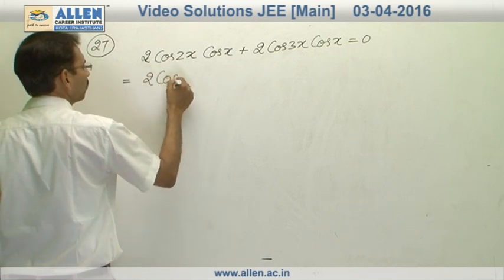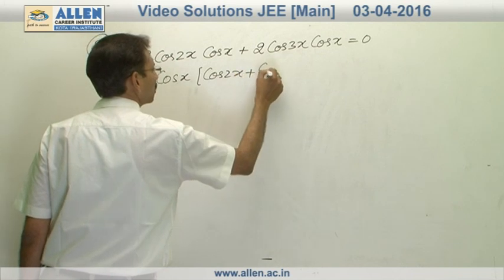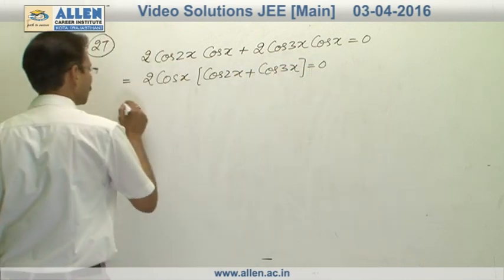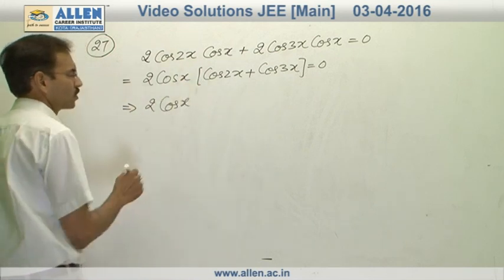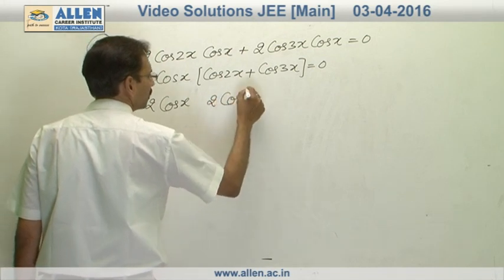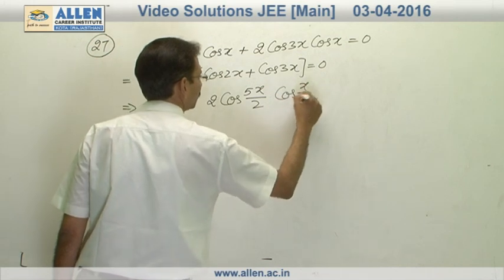We will take 2 cos x common. Now we have cos 2x plus cos 3x equals to 0. Now cos 2x plus cos 3x, we can write it as 2 cos 5x by 2 and cos x by 2 equals to 0.